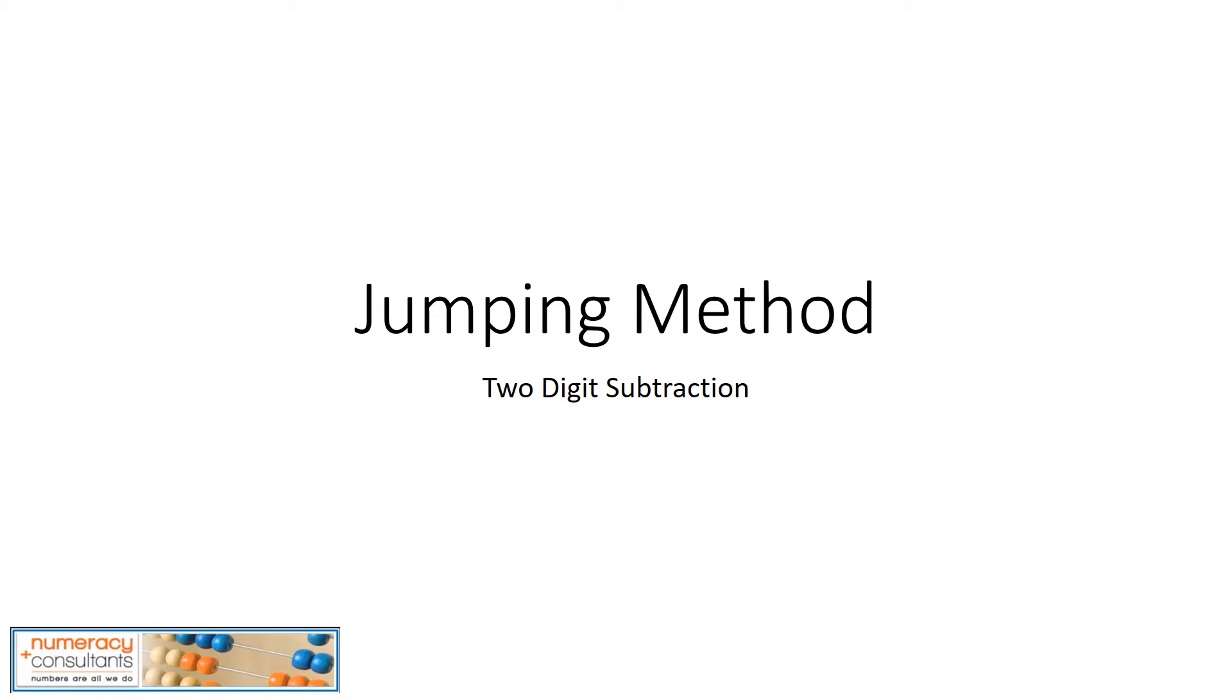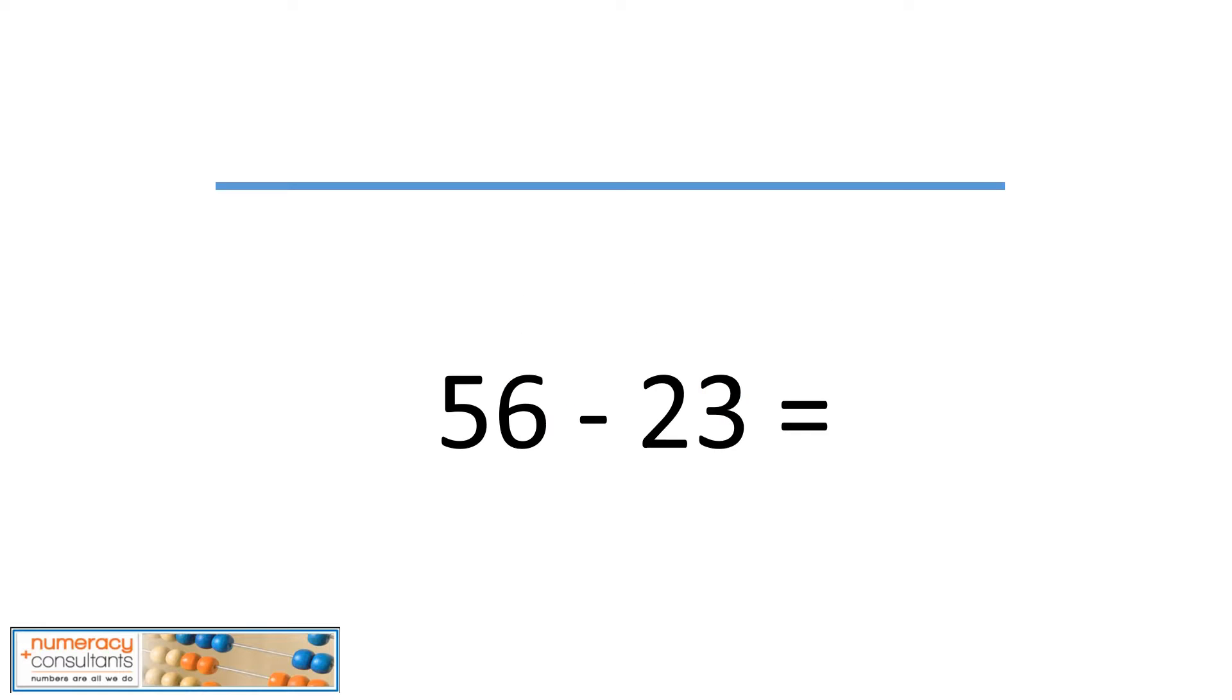The jumping method with two-digit subtraction. Let's take a look at this one: we have 56 minus 23. Now we've done the jumping strategy with addition. The only difference is we're now going to do it with subtraction, so not only do they have to be able to count by tens, but they'll count by tens backwards. But conceptually everything still should be the same in how we do it.